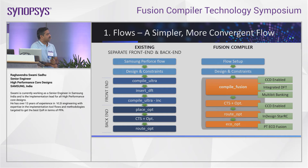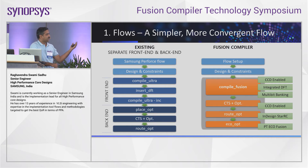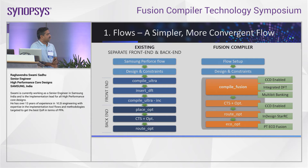In our flow during experimentation, we integrated CCD before synthesis and integrated DFT — the DFT is inserted at the RTL stage itself. We also used multi-bit banking options. One good advantage in Fusion Compiler with multi-bit banking is that we don't need to define mapping information as we used to in DC Next or DC — the tool takes the library information and does the multi-bit banking by itself. We enabled CCD in CCopt, enabled InDesign StarRC in route-opt, and ECO is the PT-ECO of the Fusion flow.